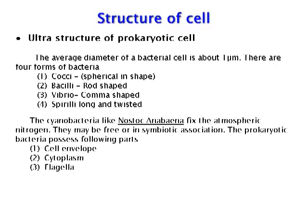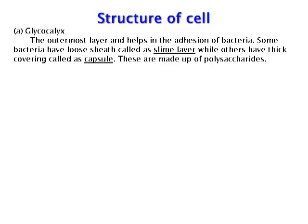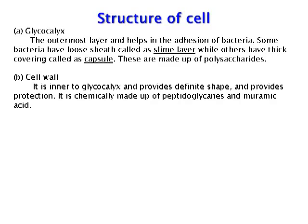Cyanobacteria like Anabaena fix atmospheric nitrogen and may be free-living or in a symbiotic association. The prokaryotic bacteria possess the following parts: cell envelope, cytoplasm, and flagella. The cell envelope is a protective covering made up of glycocalyx, cell wall, and plasma membrane. Glycocalyx is the outermost layer and helps in the adhesion of bacteria. Some bacteria have a loose sheath known as the slime layer while others have a thick covering known as a capsule; these are made up of polysaccharides. The cell wall is inner to the glycocalyx, provides definite shape and protection, and is chemically made up of peptidoglycans and muramic acid.